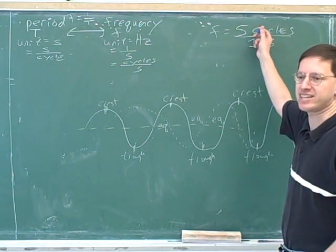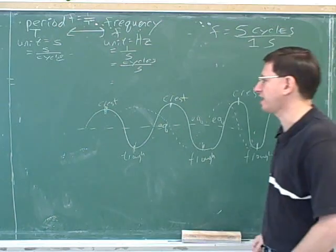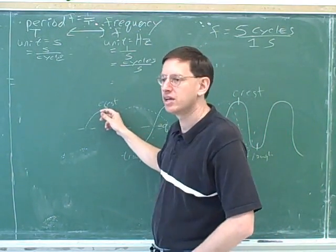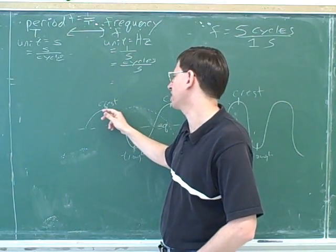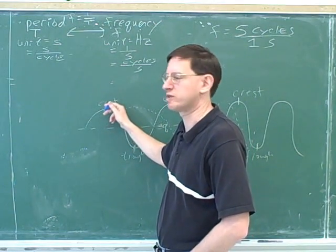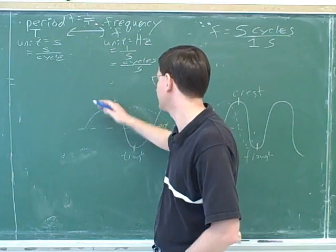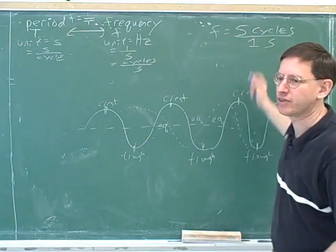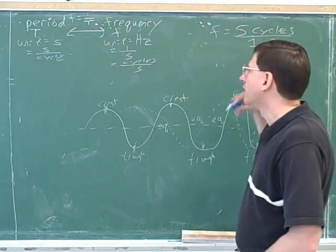So this must be oscillating pretty fast if it goes through 5 cycles in just 1 second. So let's say we stare at this point over here. We stare at this point on the wave. Well, if it starts at a crest, if we wait for 1 second, we're going to count it come back to a crest 5 times. So it must be moving pretty fast to go through 5 times. 1, 2, 3, 4, 5. I can't do it that fast. I do it in 1 second. So this is oscillating pretty quickly over here. Okay.